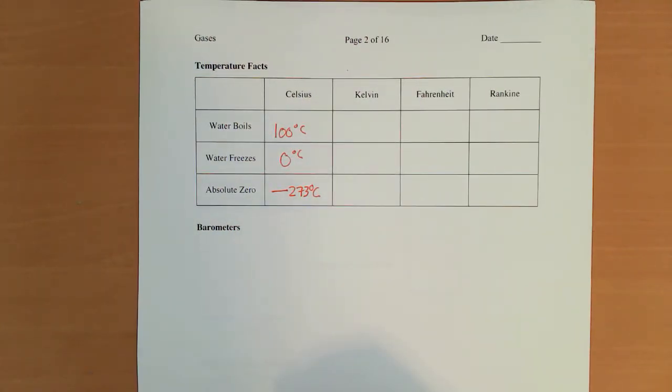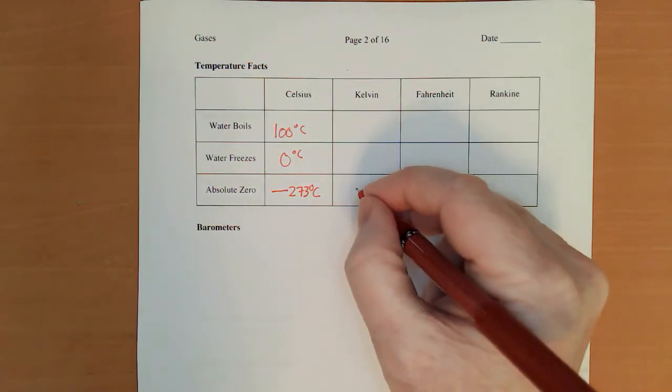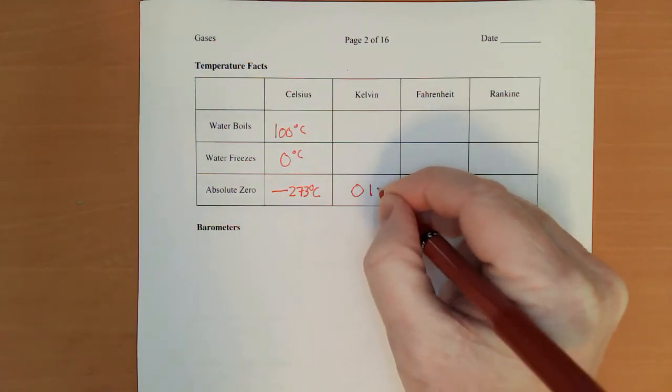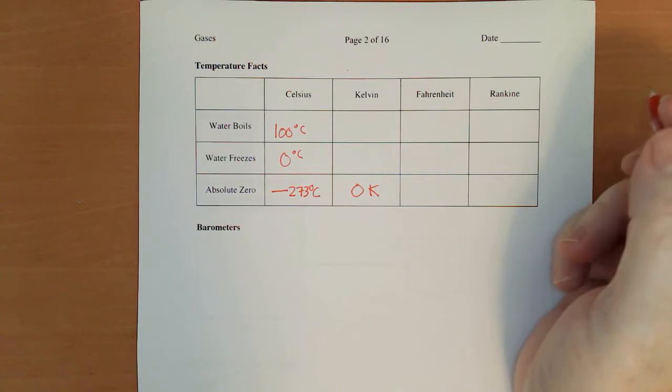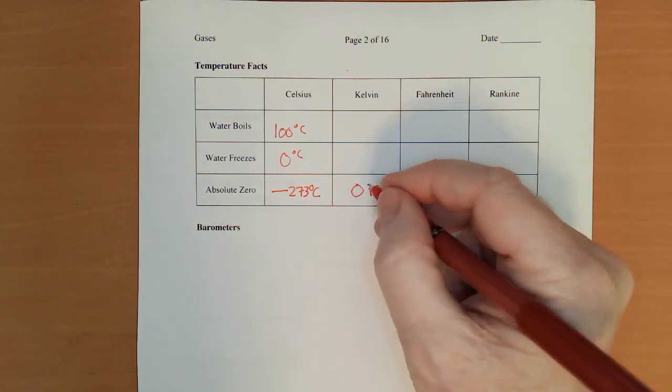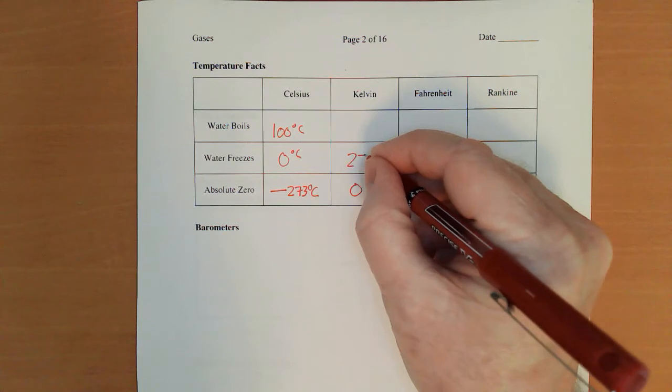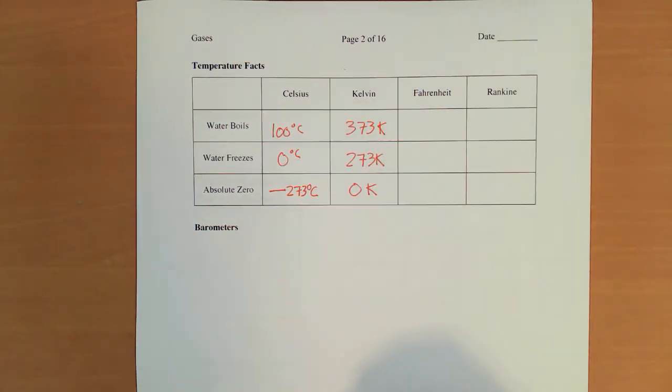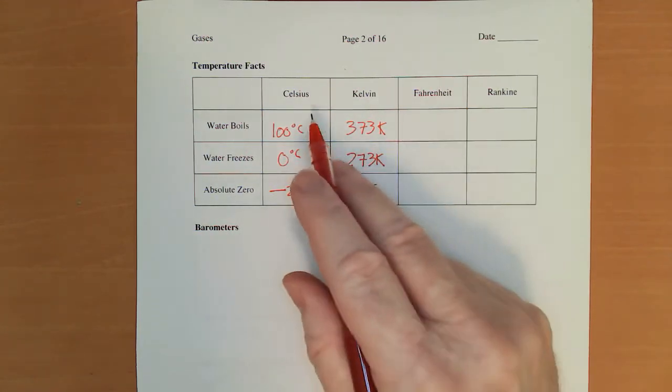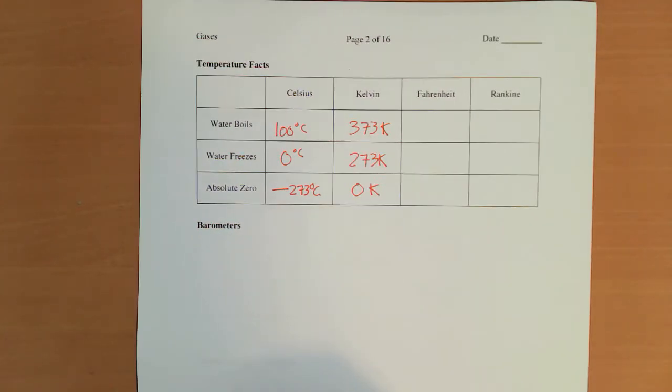That allows us to establish the Kelvin scale, where absolute zero is 0 Kelvin. We don't use a degree sign. I'm not actually sure why there. 273 is where water boils. Now, the Celsius degree and the Kelvin degree are the same size as each other.